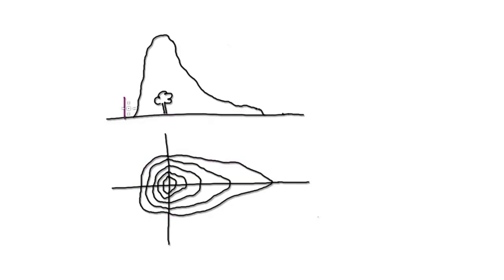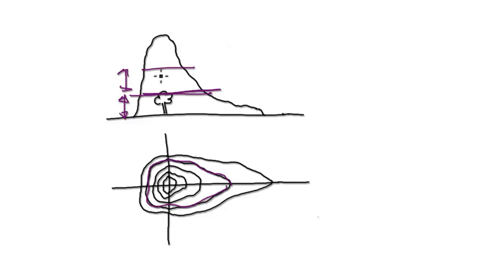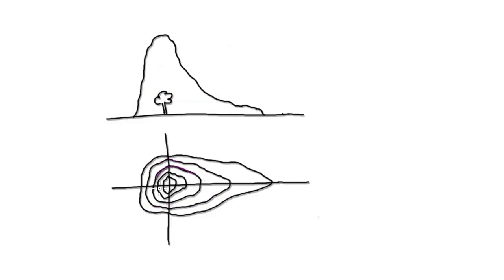If you move up a height of 100 meters and cut the mountain right here, that correlates to this line on this diagram. Then move up another hundred meters and cut the mountain right here — this has an elevation of 200, which corresponds to this curve here, and so on.